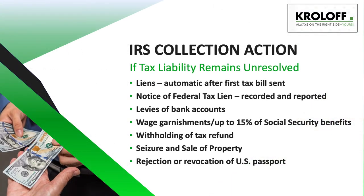In the event that a taxpayer's liability remains unpaid, the IRS does have the power to issue liens — first a general unfiled lien, and later a notice of federal tax lien, which is recorded against the taxpayer's real property or filed with the Secretary of State. These liens also show up on credit reports. The IRS can also levy all the money in the taxpayer's bank account, although the bank must hold on to that money for at least 21 days to give the taxpayer a chance to respond. The IRS can garnish a taxpayer's wages by contacting his or her employer, and can even get up to 15% of Social Security benefits. The most severe action the IRS can take is the seizure and sale of a taxpayer's property, which usually only happens when the taxpayer has been unresponsive for some time and all other attempts to resolve the tax matter have failed.